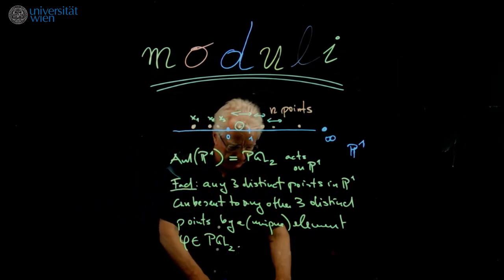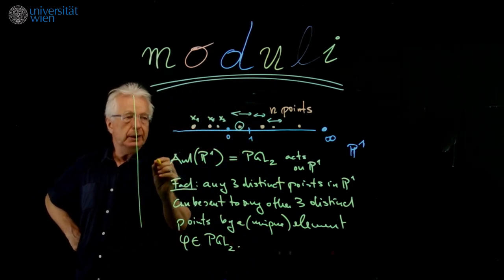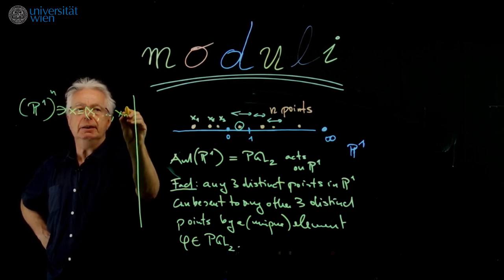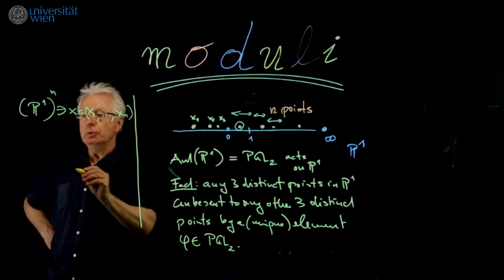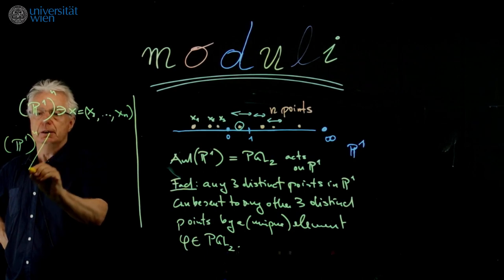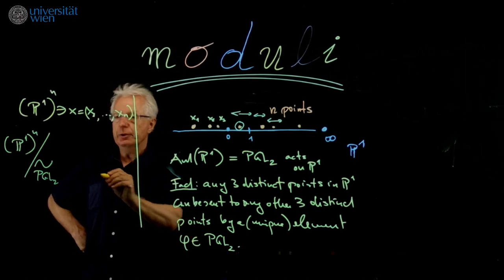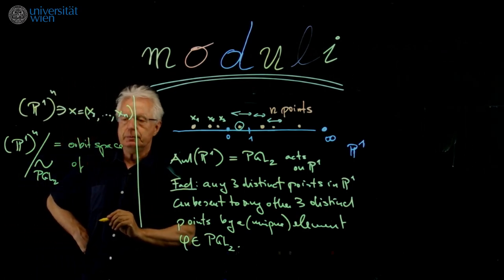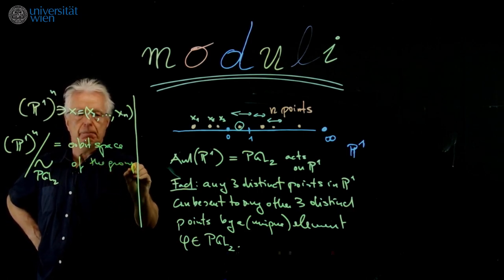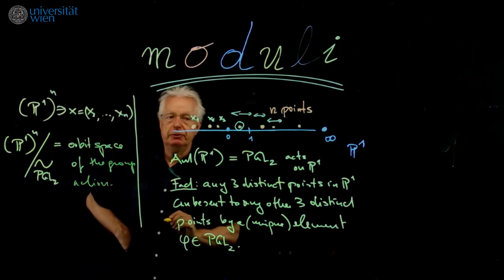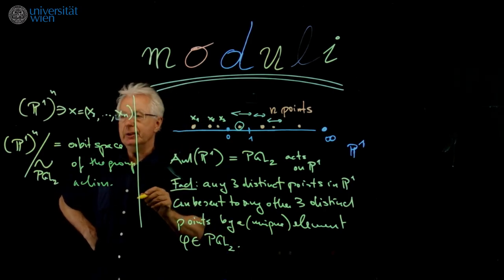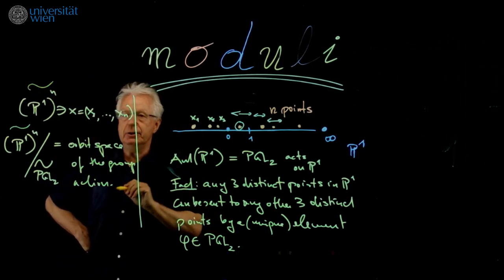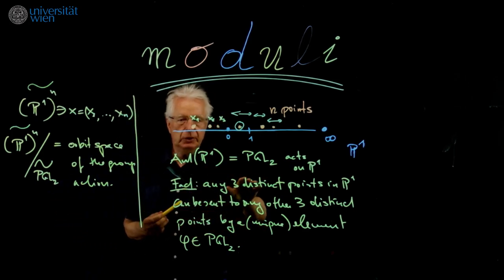And the problem of moduli is we take these n points, which is P^1 to the n. So here we have our x equals (x1 up to xn). And what we want to do, we have the action of PGL2, so we want to study this up to PGL2. This is what we could call the orbit space of the group action. But we have to take a little bit of care because we assumed the n points here to be distinct.